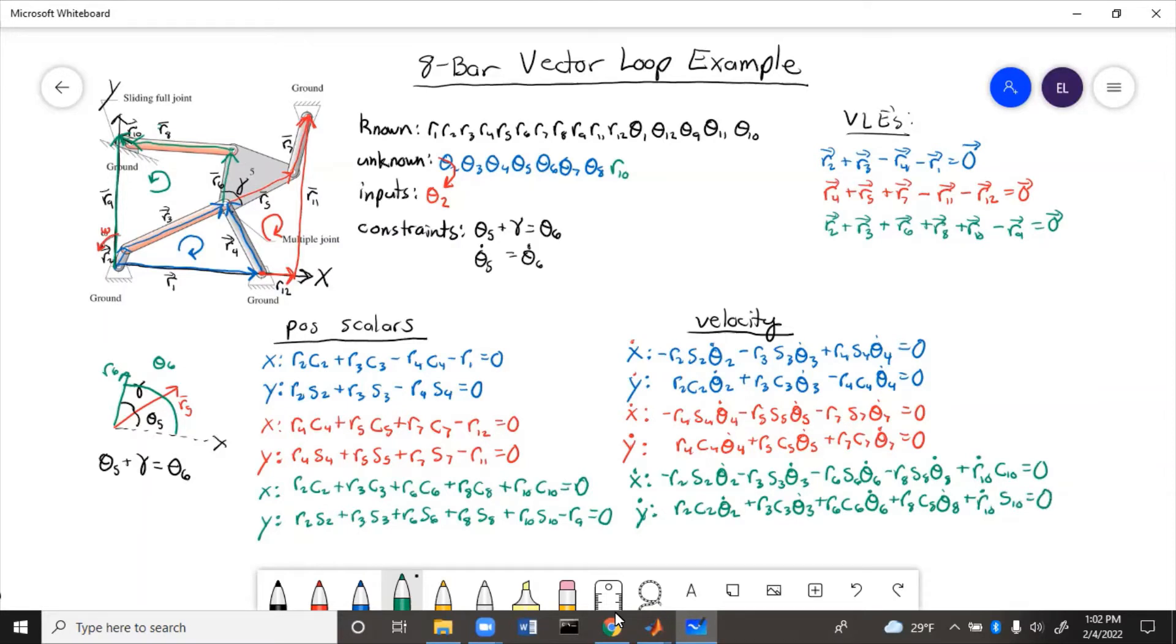So now that we've got these velocity equations, we can substitute out the constraint equation, so that we will get our matrices to be 6 by 6 and 6 by 1, because we'll need to put it into that J theta dot equals B to solve.